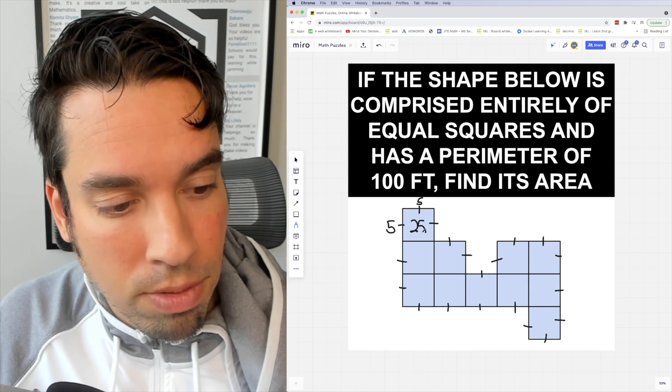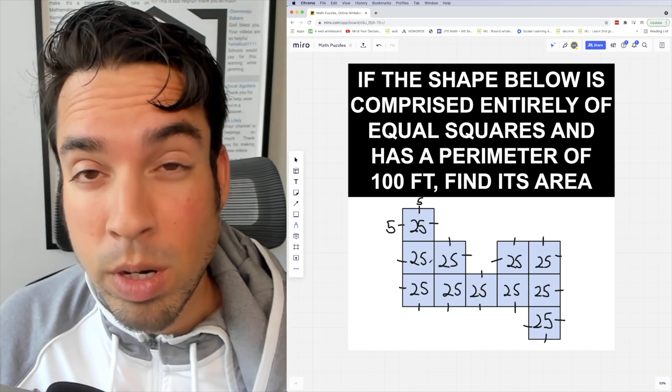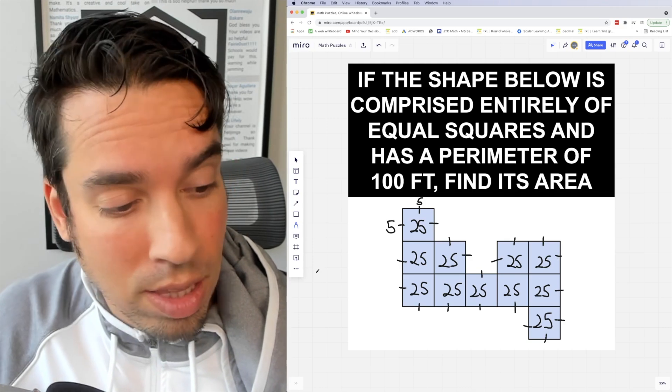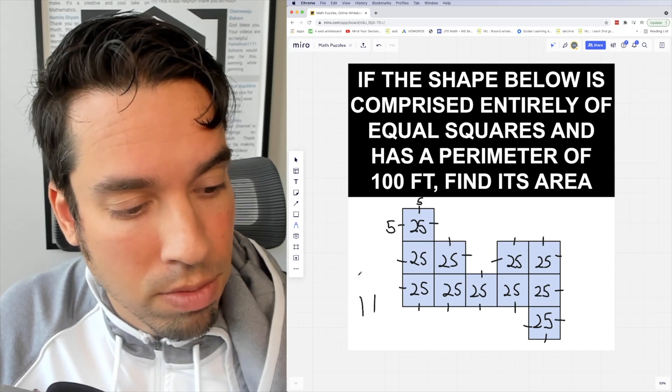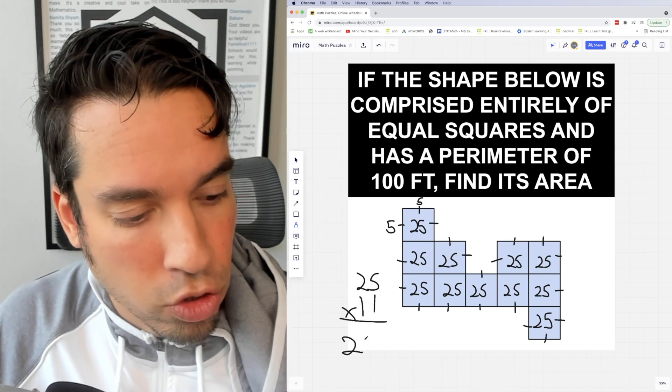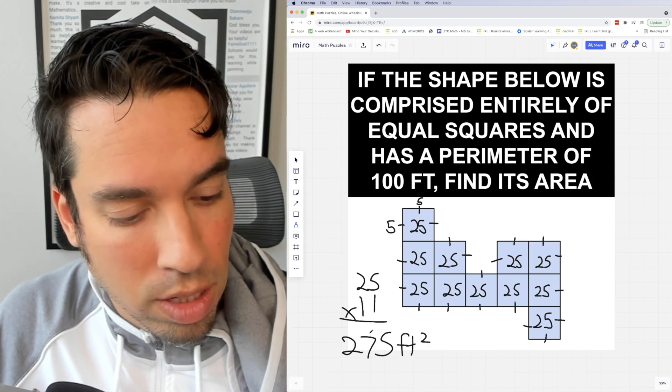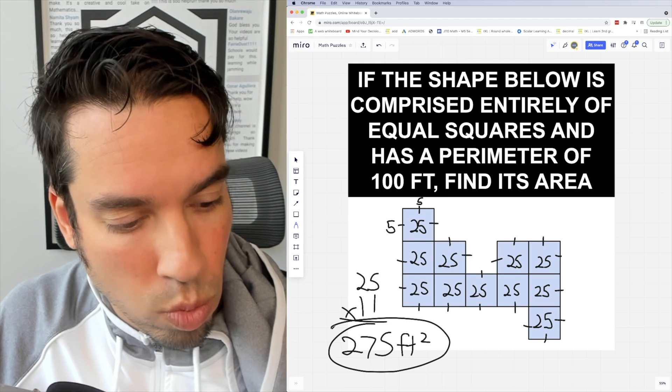Since all of the squares have an area of 25 and there are 11 squares, to get the final area we do 11 times 25. This is, of course, 275. So the area is 275 feet squared. I hope you guys enjoyed this math puzzle.